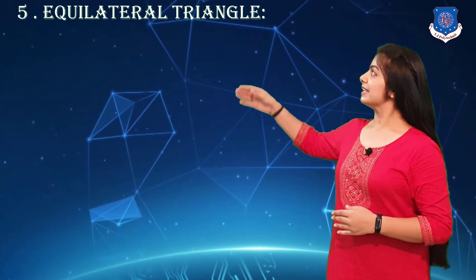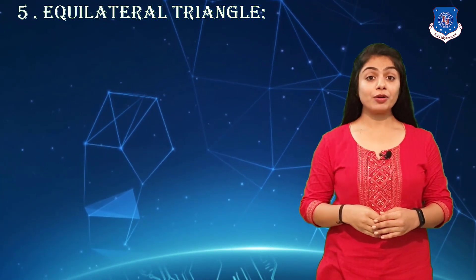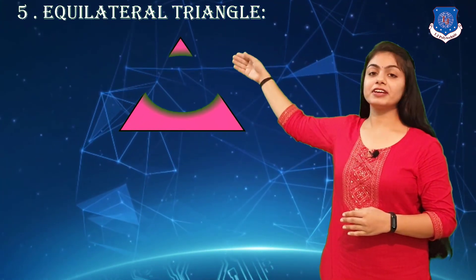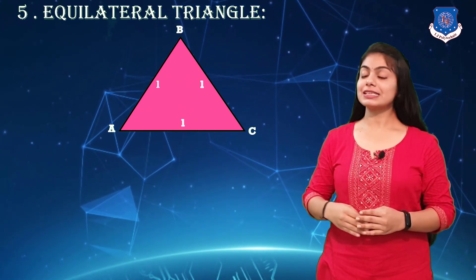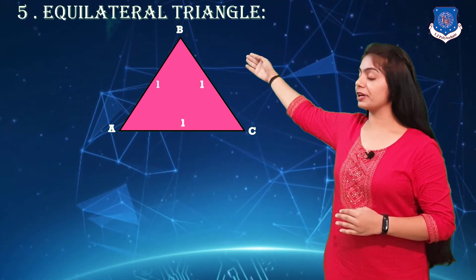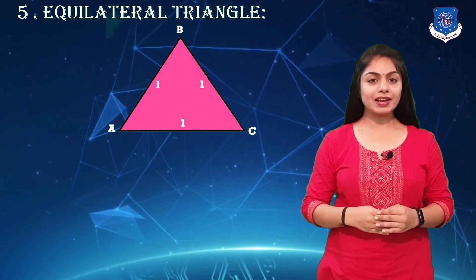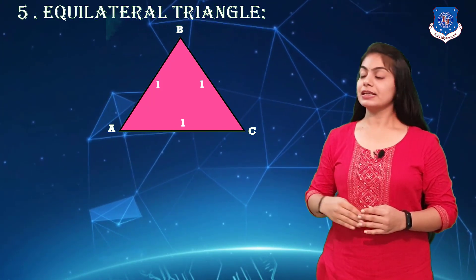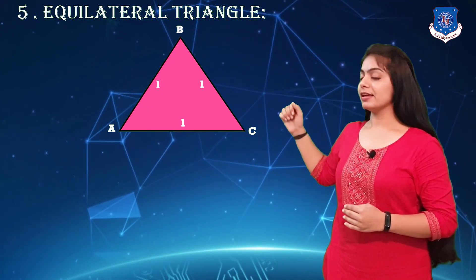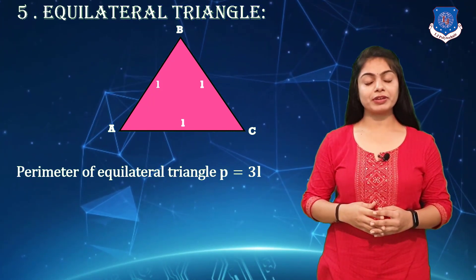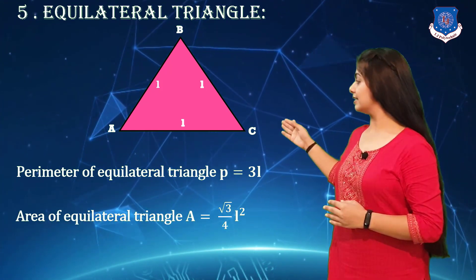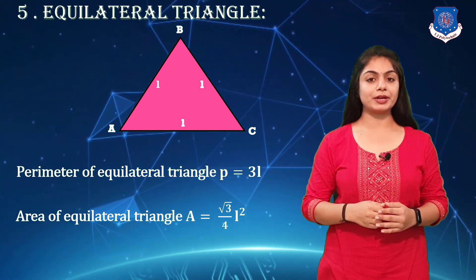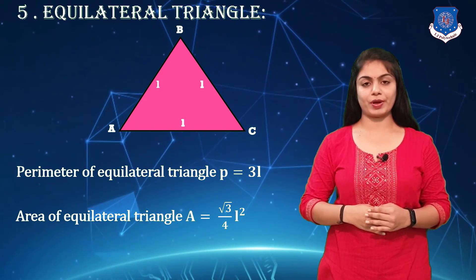Our fifth plane figure is the equilateral triangle. Look at the figure — every side is equal, denoted by L. The perimeter of an equilateral triangle is 3L, and the area of an equilateral triangle is (√3/4)L².